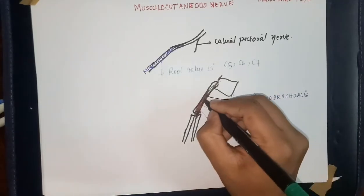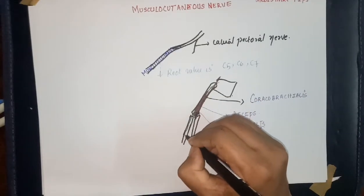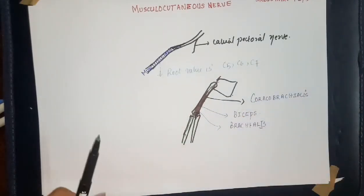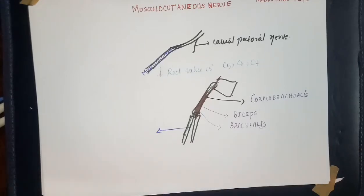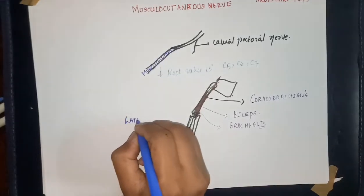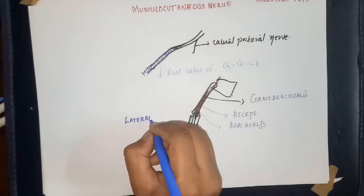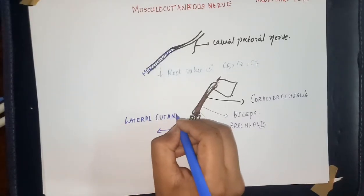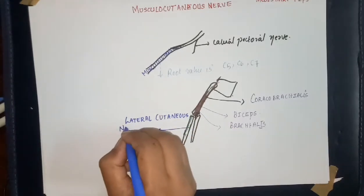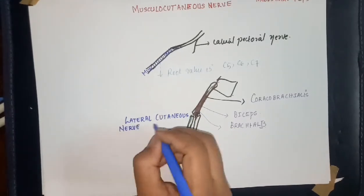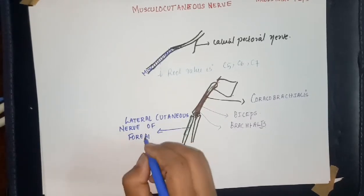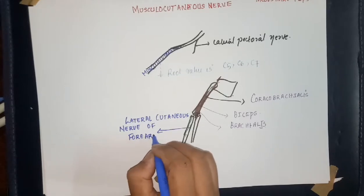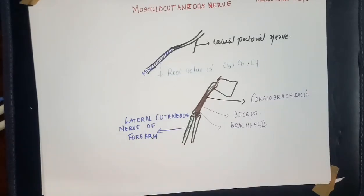After supplying these muscles, the nerve continues as the lateral cutaneous nerve of the forearm. This continuation — the lateral cutaneous nerve of the forearm — is a sensory branch of the musculocutaneous nerve.